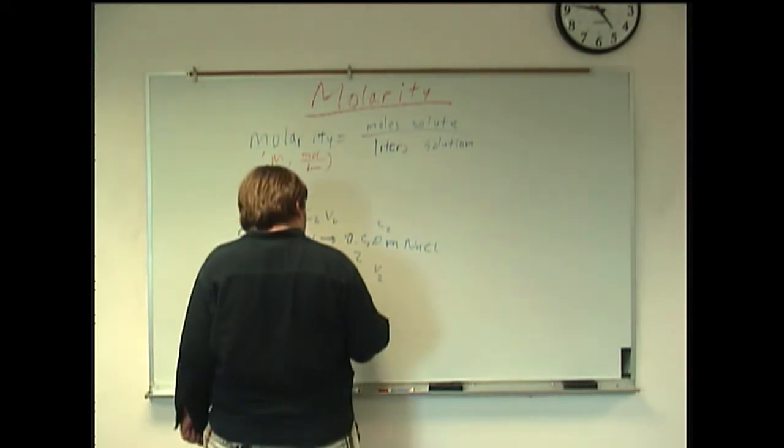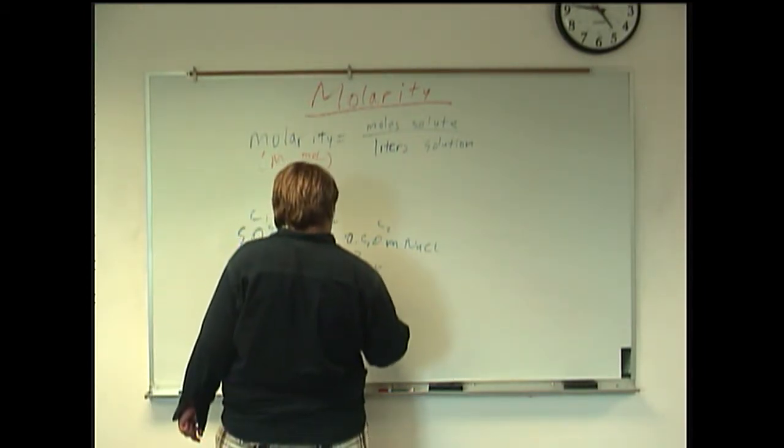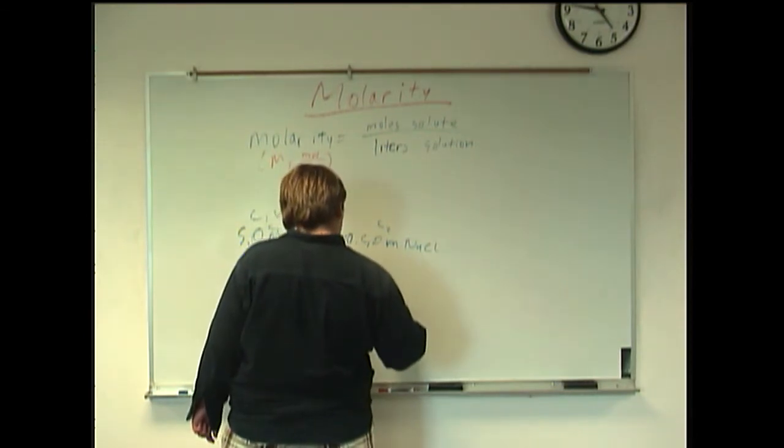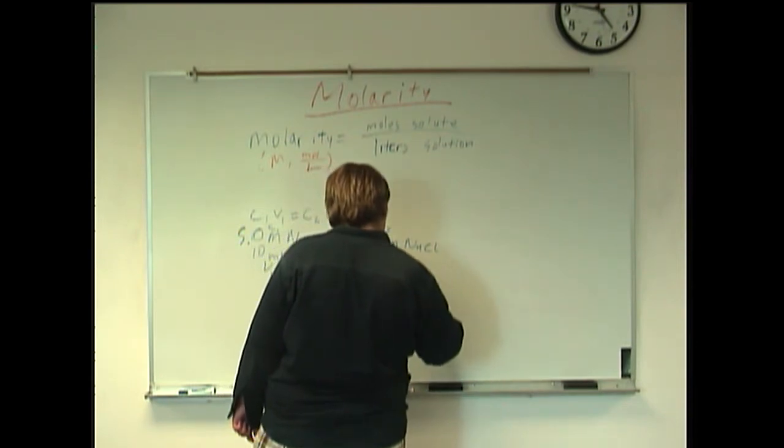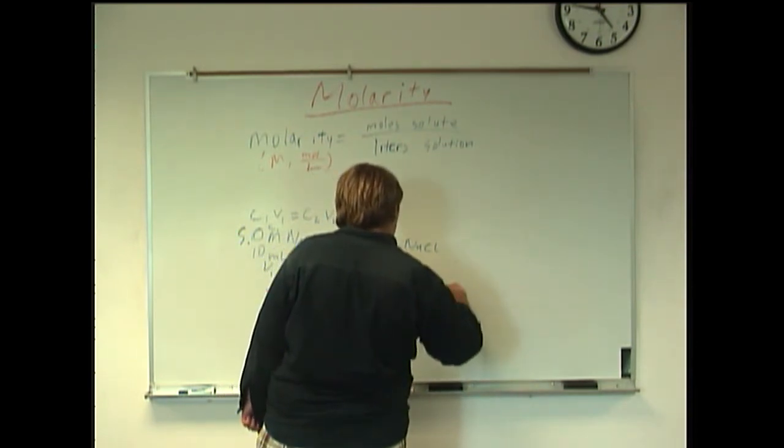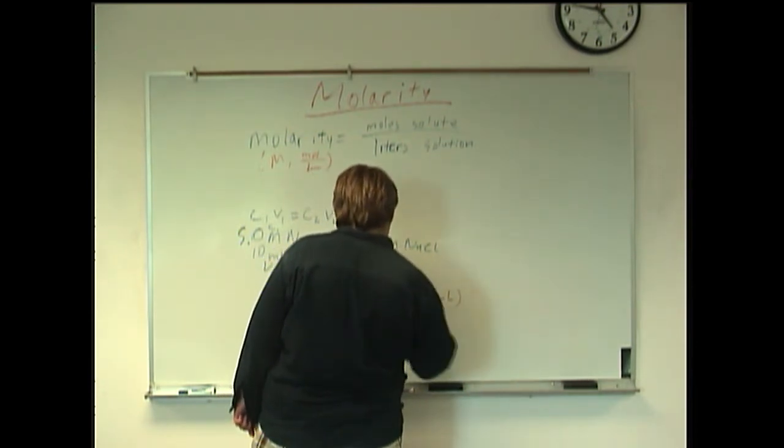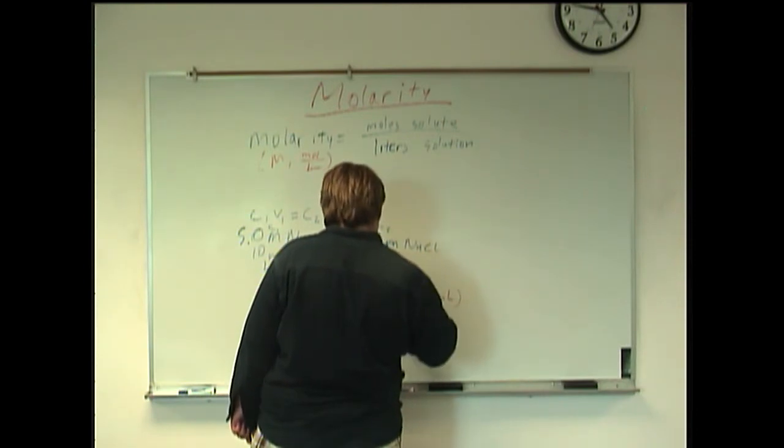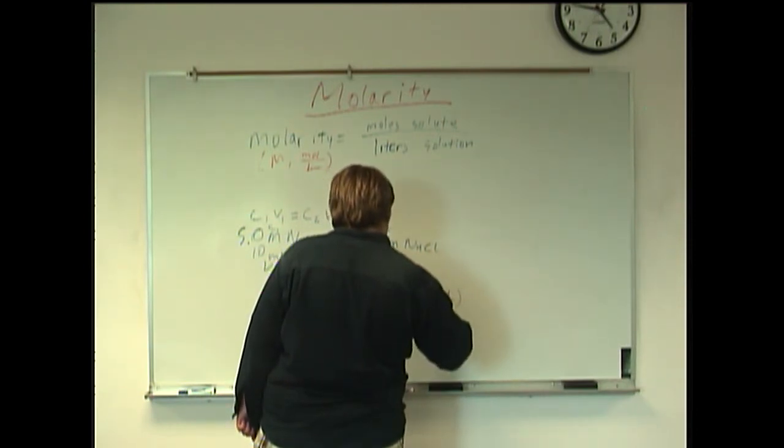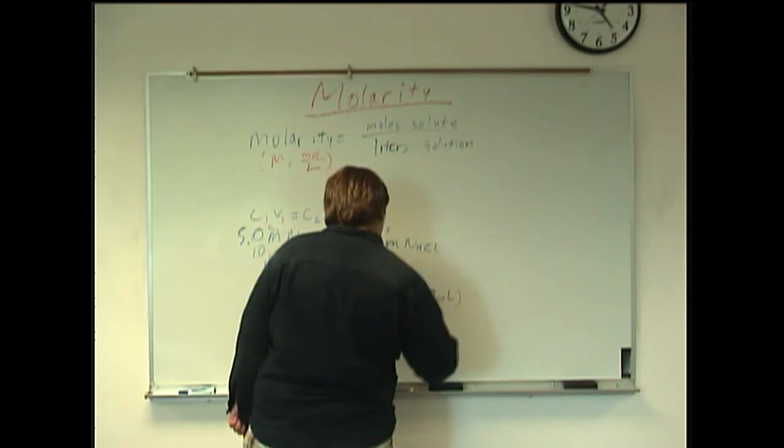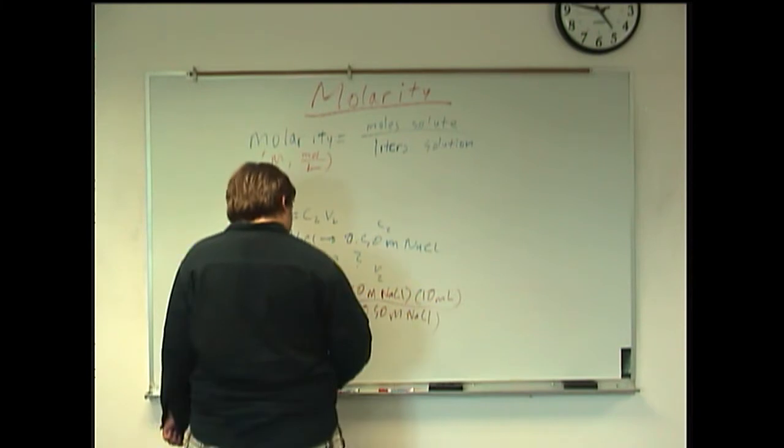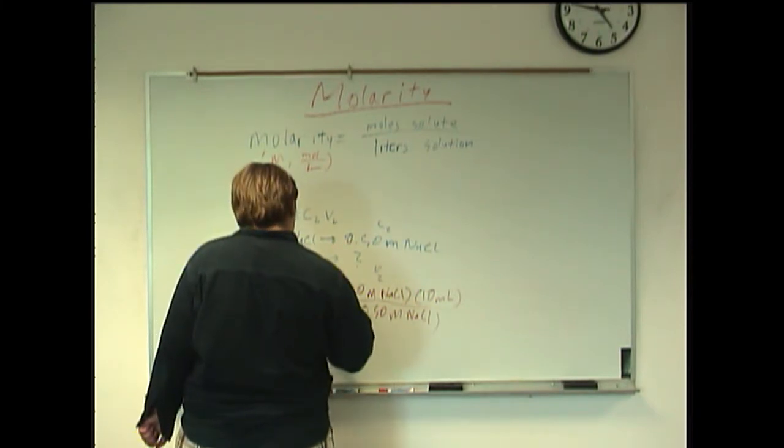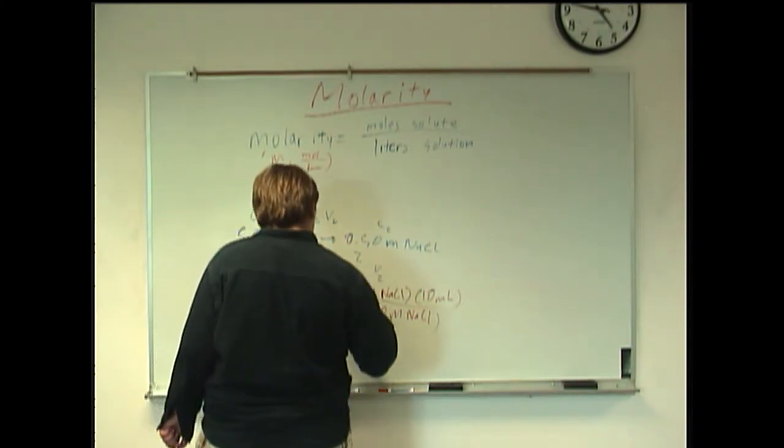We have 5 molar NaCl times 10 milliliters, divided by 0.5 molar NaCl. And doing the math, we get a final volume of 100 milliliters.